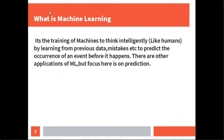What is machine learning? It's the training of machines to think intelligently like humans by learning from previous data and mistakes to predict the occurrence of an event before it happens. There are other applications of machine learning, but the focus here is on prediction.